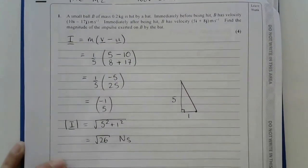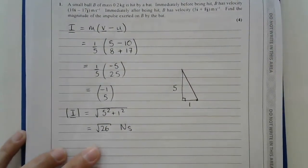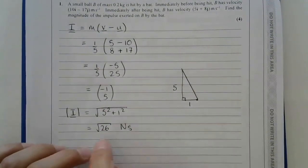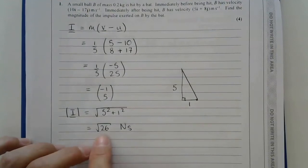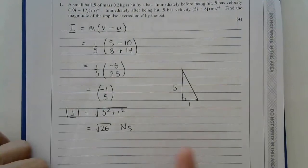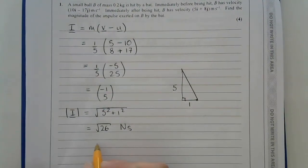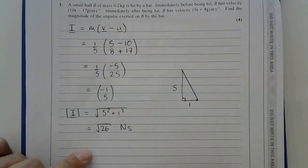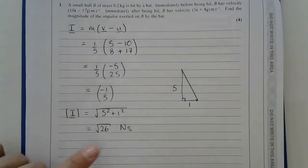Now a lot of students then do an extra step and change this into a decimal, but why take that risk? You've already finished. You've found the impulse. There's no need to write this as a decimal. So you can just leave it like this. I say it's a risk because if you round it off and round it off incorrectly, then you will lose an accuracy mark. So it's better to leave your answer like this.